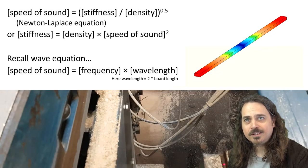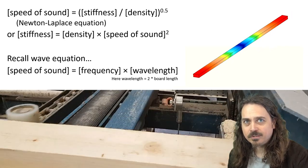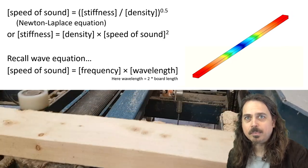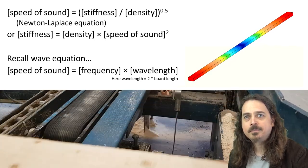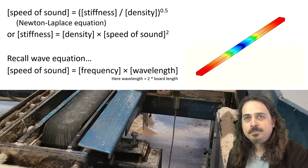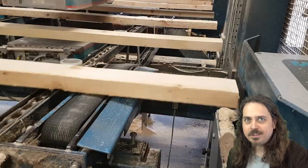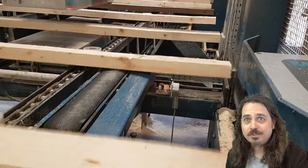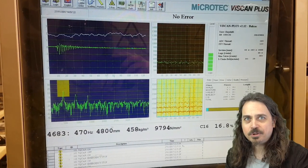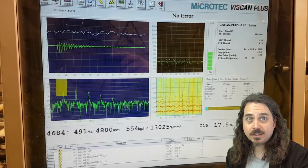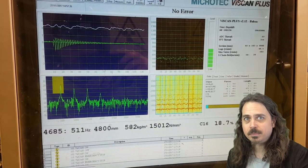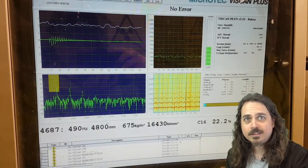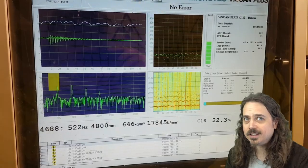There's a laser vibrometer that measures the frequency of vibration. Other types of machine use contact transducers or even microphones to get that frequency. In principle there's no limit to how big a board can be for this kind of machine. On the machine control panel you can see it's doing an FFT — a fast Fourier transform — to get the peak frequencies, and that's what it uses to calculate the dynamic stiffness as the indicating property.